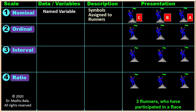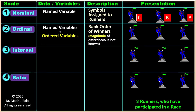Ordinal scale has the characteristics of named variable plus ordered variable. The additional feature here is ordering of the variables. In ordinal scale, the rank order of the winners has been done: A has been assigned rank first, B second, and C third. They participated in the race and achieved first, second, and third place, but the magnitude of difference is not known here.